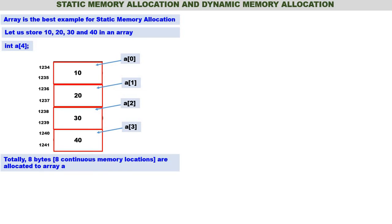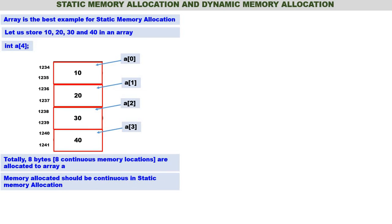Totally eight bytes are allocated to array 'a' — eight continuous bytes. In static memory allocation, memory has to be continuous.